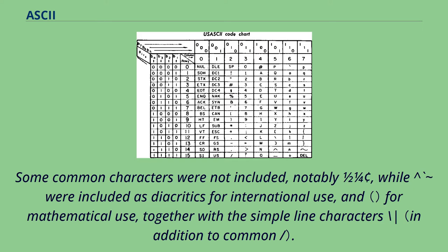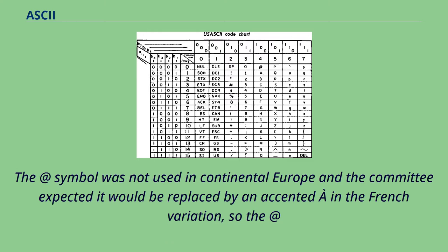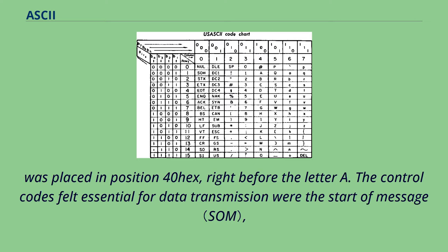Some common characters were not included, notably half and one-quarter cent. Tilde and similar marks were included as diacritics for international use. The at symbol was not used in continental Europe and the committee expected it would be replaced by an accented A in the French variation, so the at symbol was placed in position 40 hex, right before the letter A.